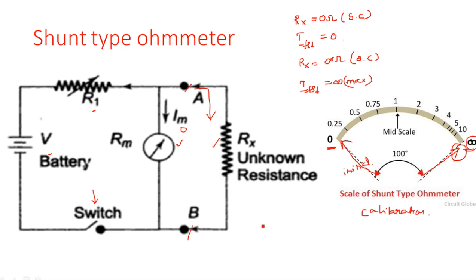Coming to the calculation part: in the series type ohmmeter we calculated R1 and R2. But in the shunt type we have to calculate only one resistor, R1. Same method as before — we calculate the unknown component after eliminating Rx from the circuit. If you eliminate Rx from the circuit, the circuit looks like a simple voltmeter: a multiplier resistor R1 in series with the meter.